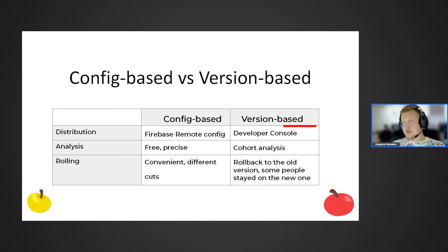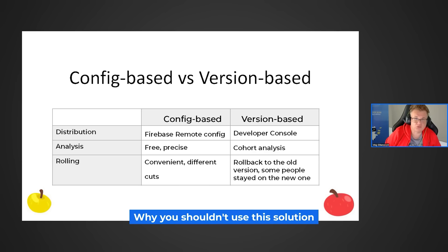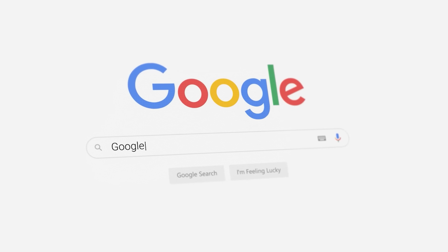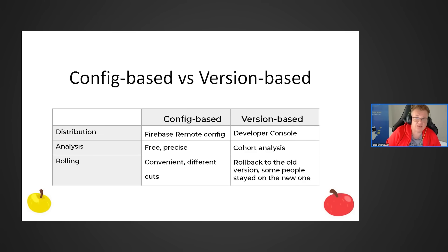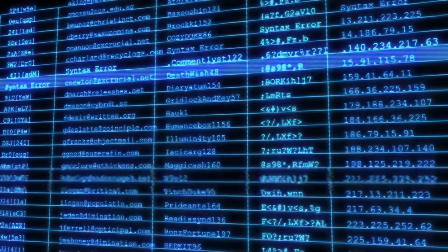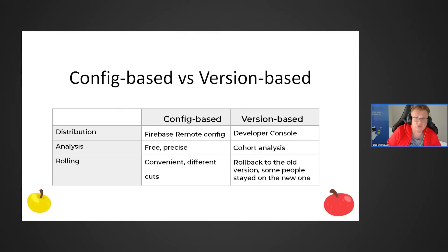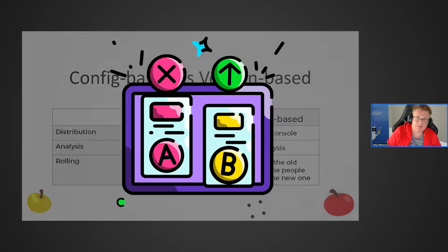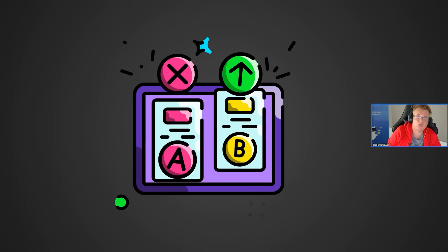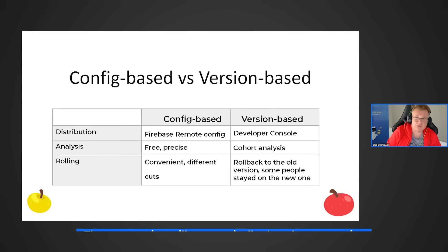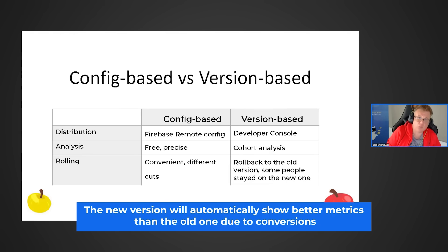The second option is version-based — a more complex and professional approach. You roll out a new build with implemented changes to 50% of your audience, while 50% remain on the old build. The fundamental problem is that Google independently pushes out updates to its services. So you release version 3.91 to 50% of users, but Google updates some users who were on 3.90 to 3.91 by its own algorithms. Yesterday you had 10,000 users on 3.90; today instead of 3,000 each, you'll have 2,850 on one version and 3,150 on the other, and the new version will automatically show better metrics because of these transitions.